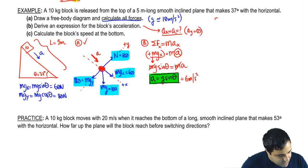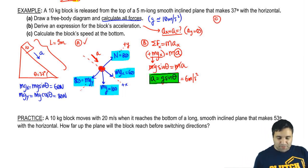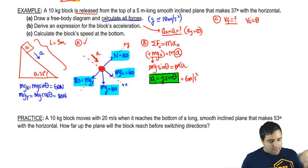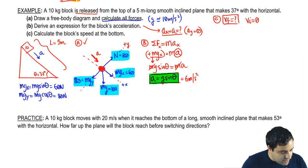Part C says find the block speed at the bottom. So this is the final velocity. It's released. This is kind of implied that it's from rest. It doesn't give me any initial velocity. I want to know the velocity at the bottom. So this is a motion problem and I have to have my variables here. The initial, the final, a, delta x, delta t.